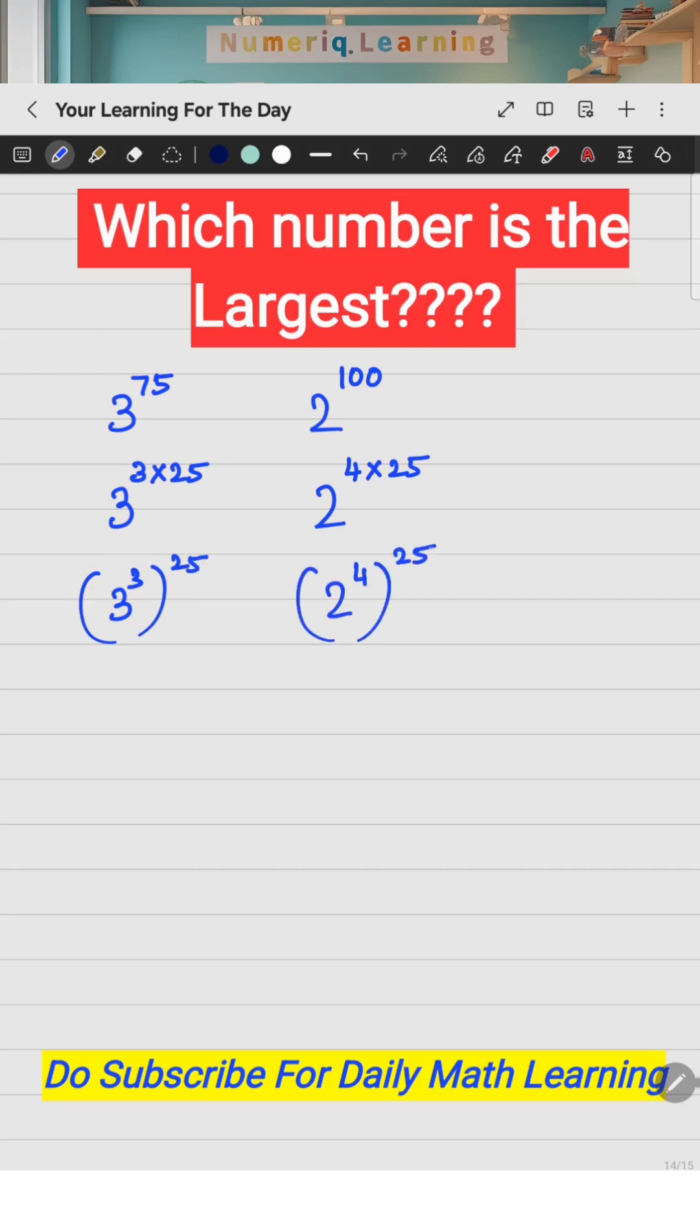So this is nothing but 27 raised to the power 25, that means 27 multiplied 25 times, and this is nothing but 16 multiplied 25 times. So now you can very easily understand: if you have two numbers, one is a bigger number multiplied 25 times, the other is a smaller number multiplied 25 times, automatically this is the biggest.